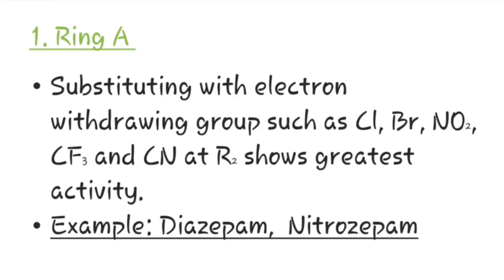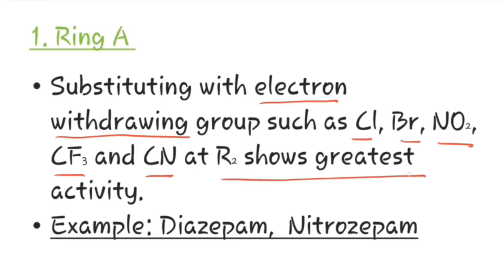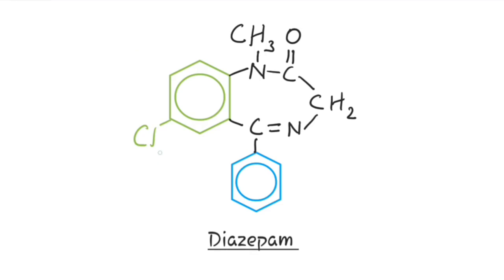First we will study modification in ring A. Substituting with an electron withdrawing group such as chlorine, bromine, nitrogen dioxide, CF3, or cyanide at R2 shows the greatest activity. The best examples are diazepam and nitrazepam. Diazepam has chlorine at the R2 position and shows greater activity.